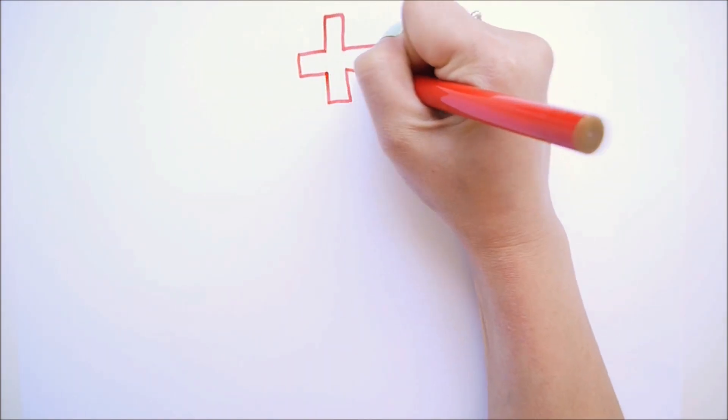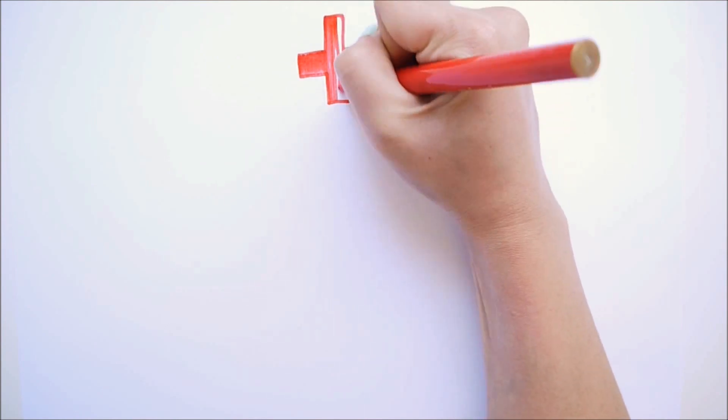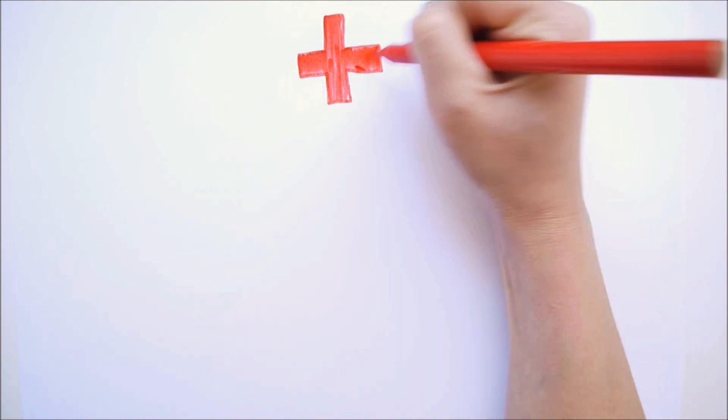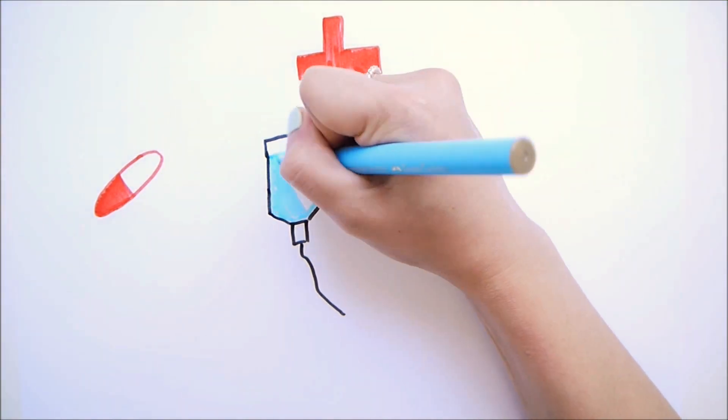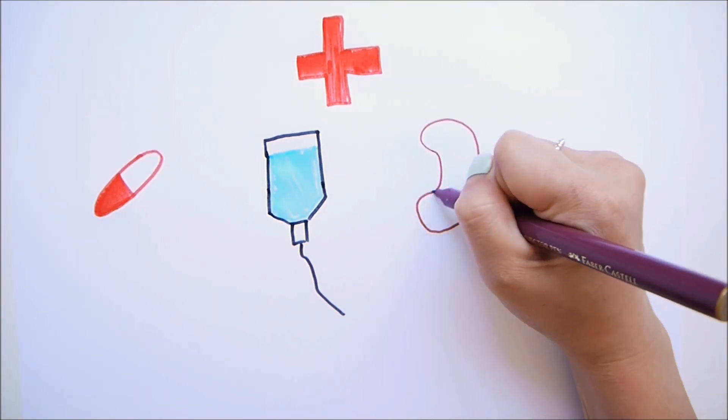Thanks to modern medicine, TSS is totally treatable. First, take the tampon out, then you'll be admitted to hospital where they'll give you antibiotics, a drip to increase your blood pressure and to treat dehydration, and any other complications, for example kidney failure which is a common one.